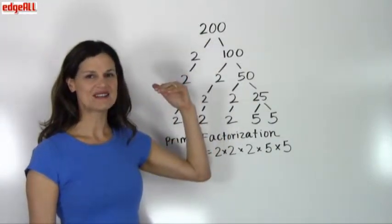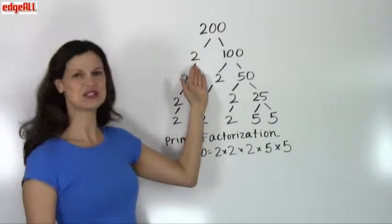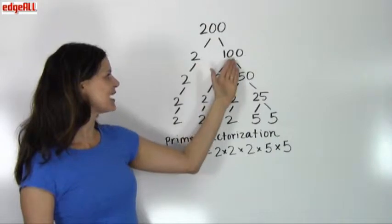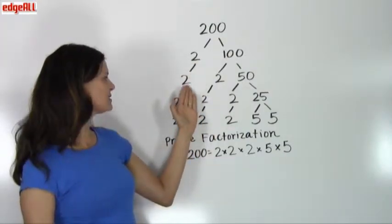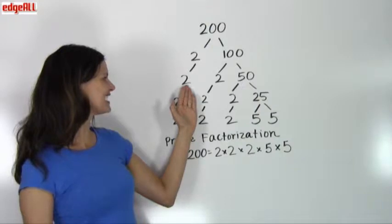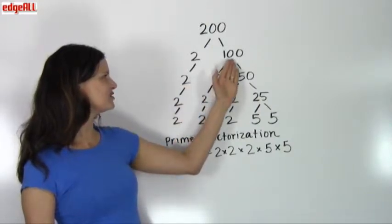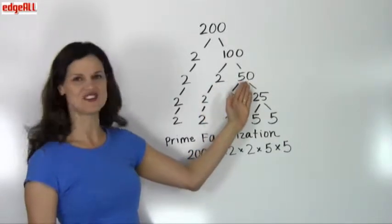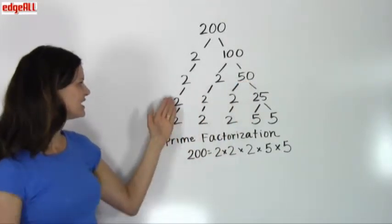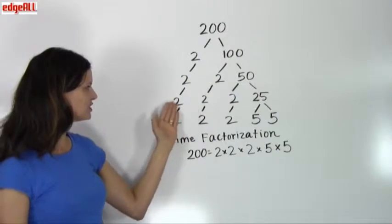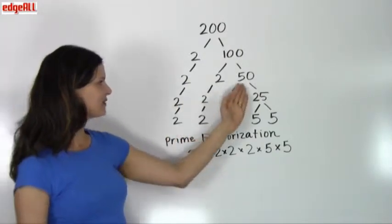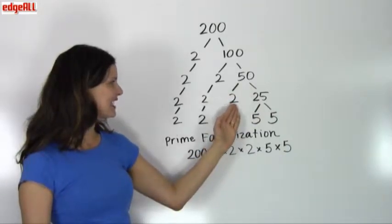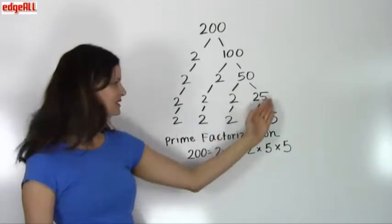We begin by dividing out the prime number 2, and we can break 200 down into 2 times 100. Since 2 is prime, it stays, and 100 gets divided by 2 to find that it's 2 times 50. We continue down to the next level, keeping our prime numbers of 2 and 2, and then we factor 50 by dividing again by 2, seeing that 50 equals 2 times 25.